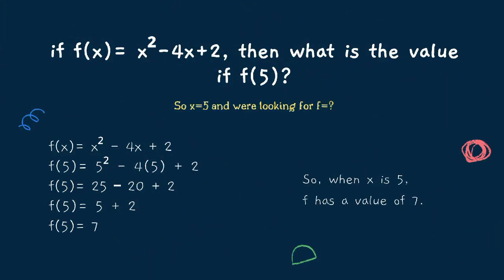If f(x) equals x squared minus 4x plus 2, then what is the value of f(5)? In the first example, we're going to evaluate the numerical value of f by substituting and simplifying. We substitute x with 5, so f(5) equals 5 squared minus 4 times 5 plus 2. Then, 25 minus 20 is 5, added by 2 is 7. The numerical value of f(x) = x² - 4x + 2 at f(5) is 7.